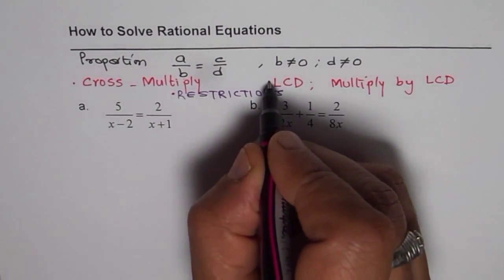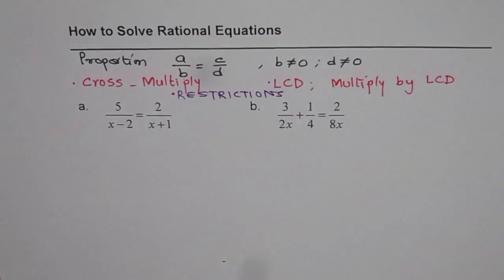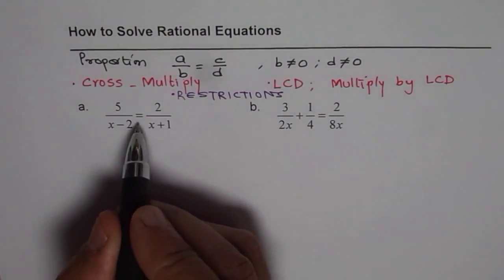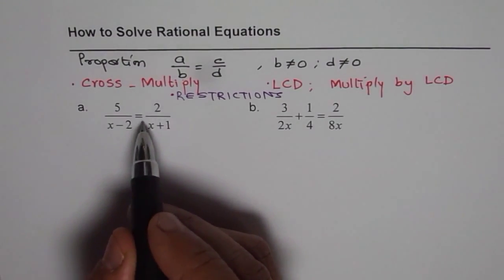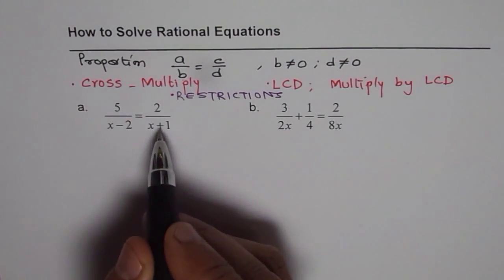Now let us adopt these methods and solve both the equations given here. First one is, 5 over x minus 2 equals to 2 over x plus 1. It is like a proportion, A over B equals to C over D. So we will cross multiply and solve.